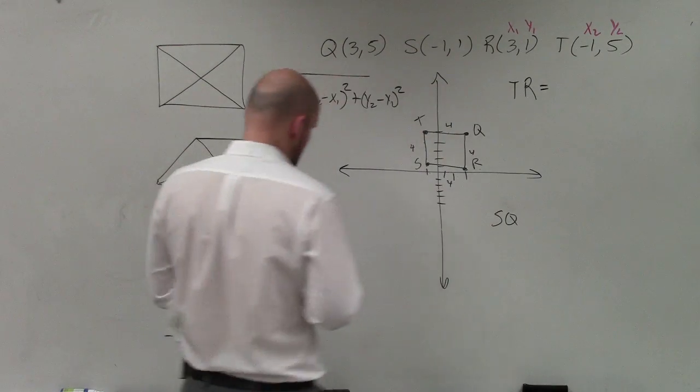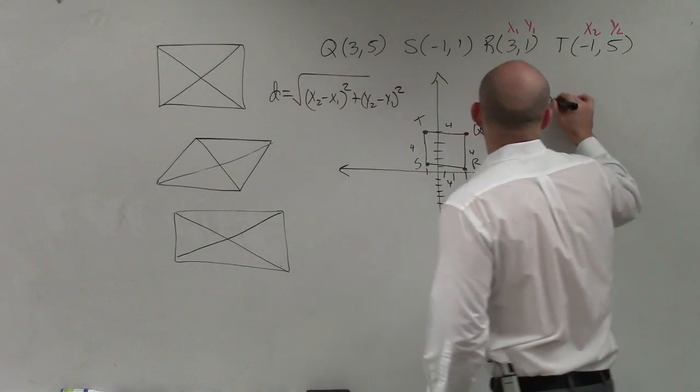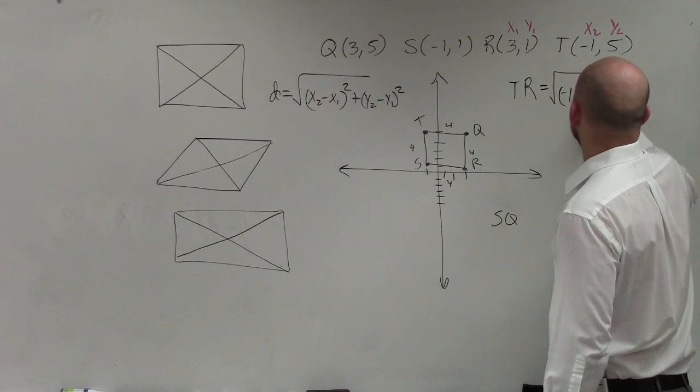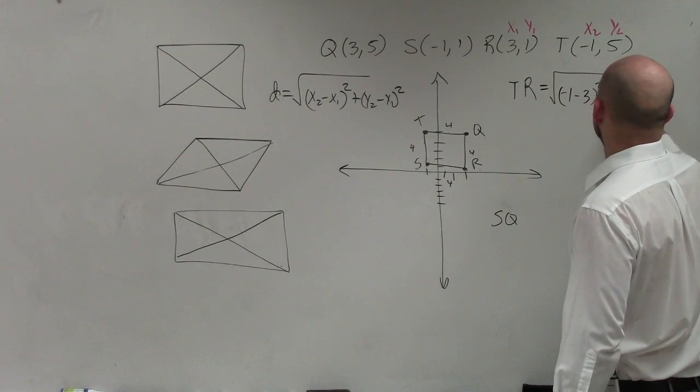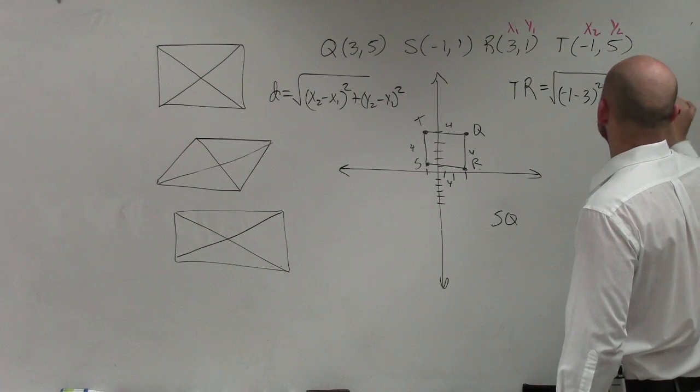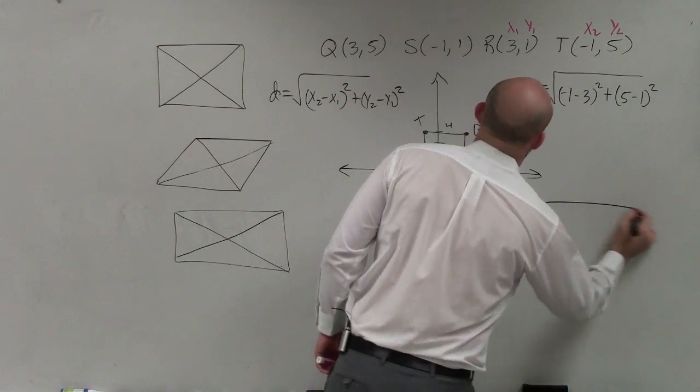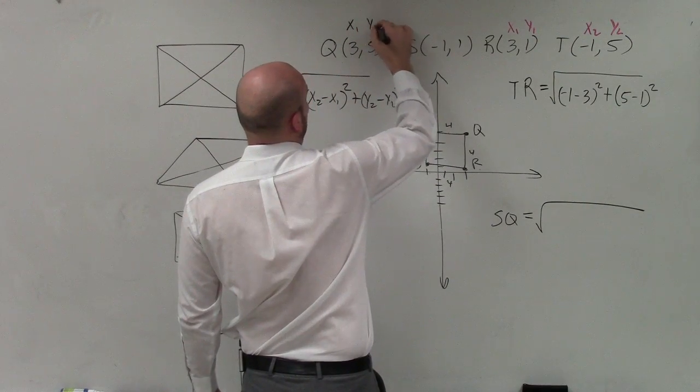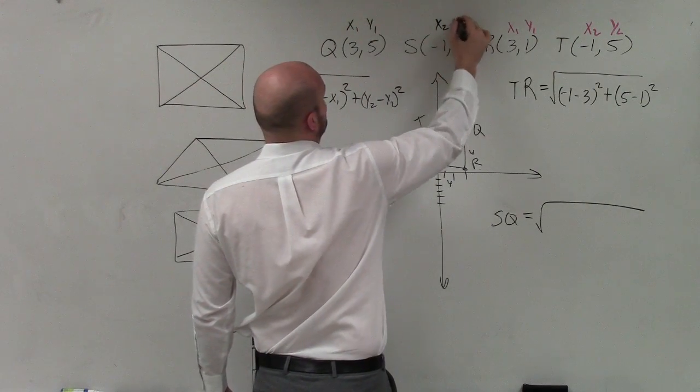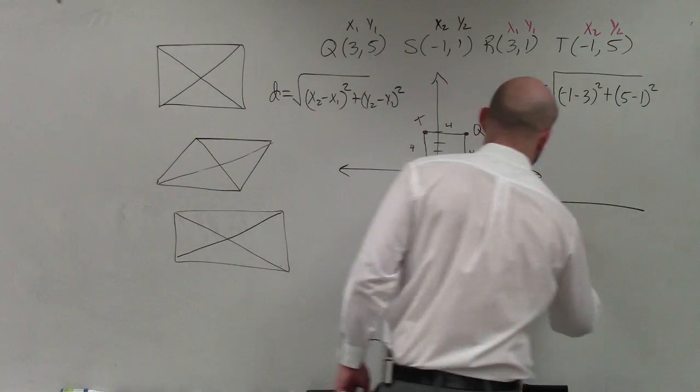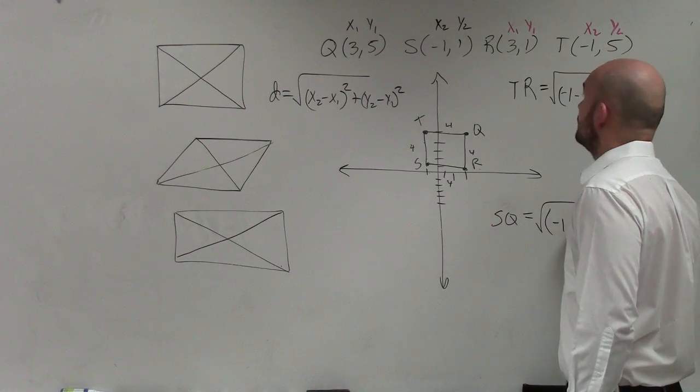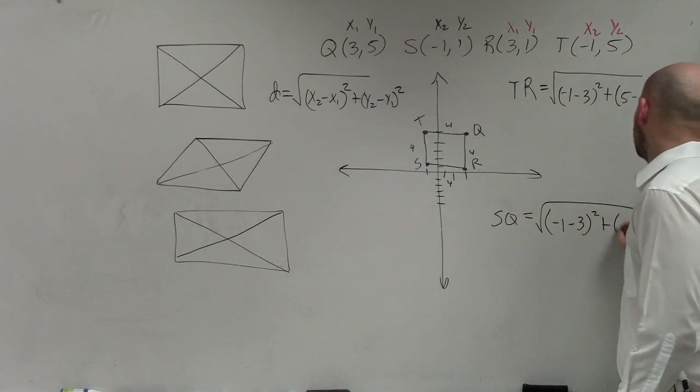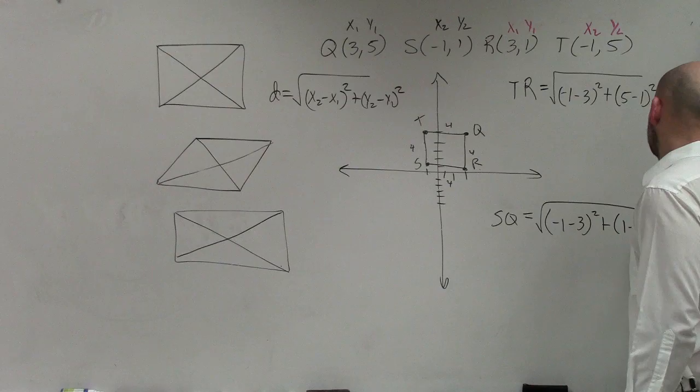Now to go ahead and find them, I'll do the square root of (x2 minus x1) squared plus (y2 minus y1) squared. And then SQ, I'll label this as x1, y1, x2, y2. And again we do the same thing: x2 minus x1 squared plus y2 minus y1 squared.